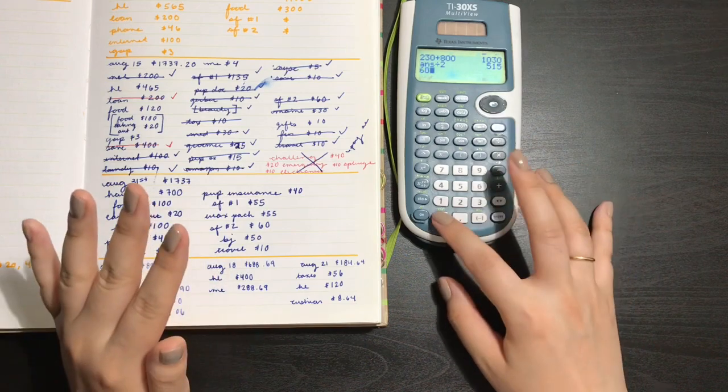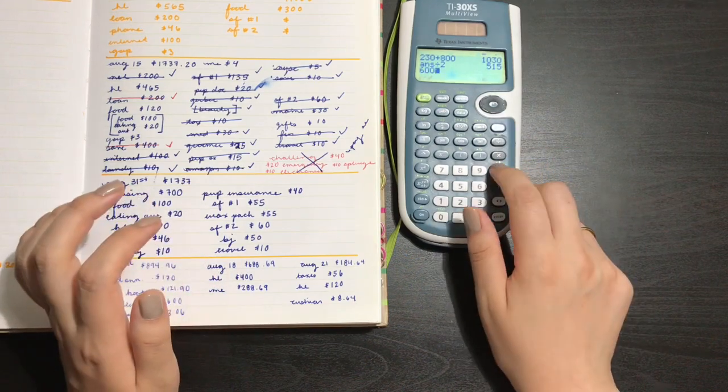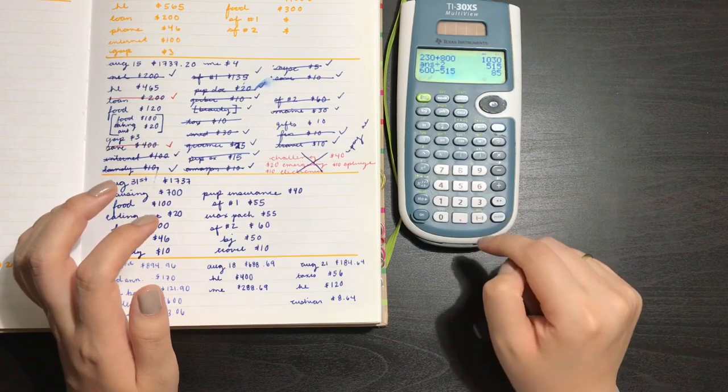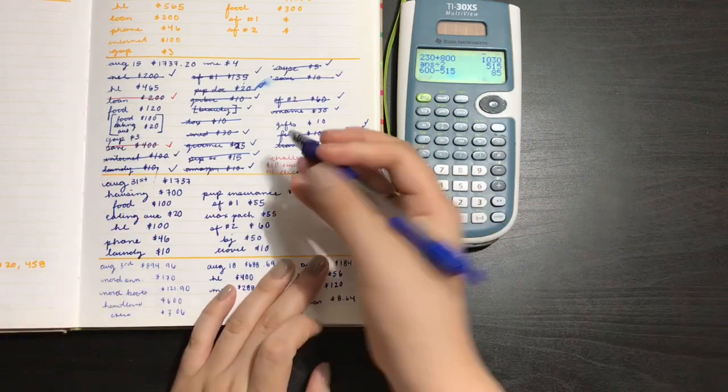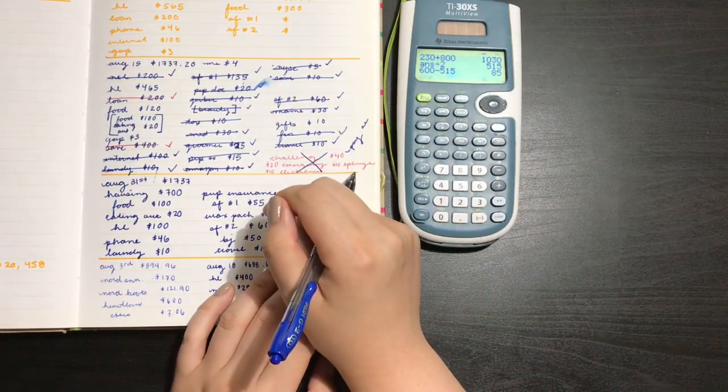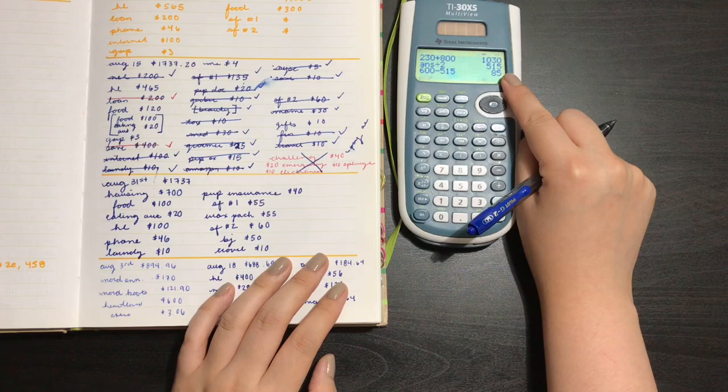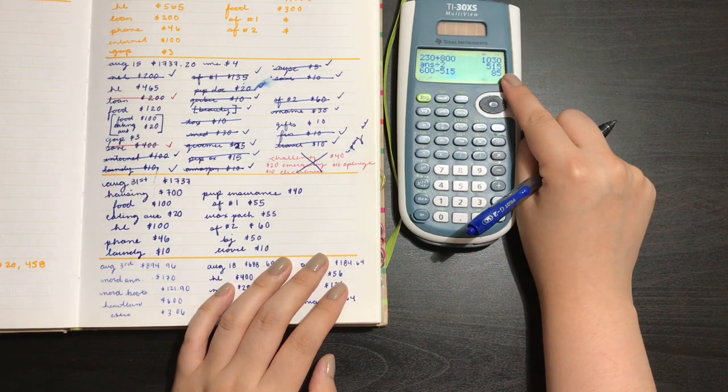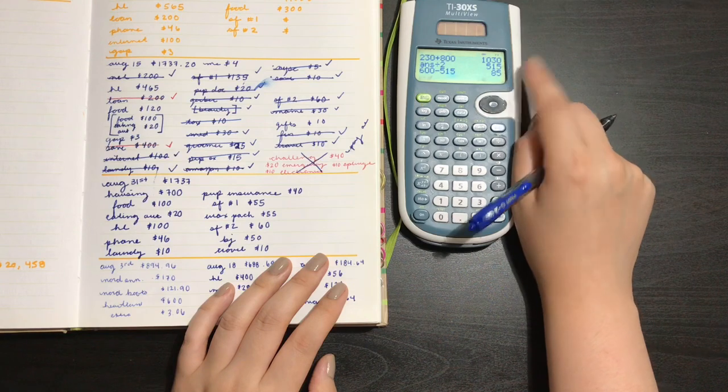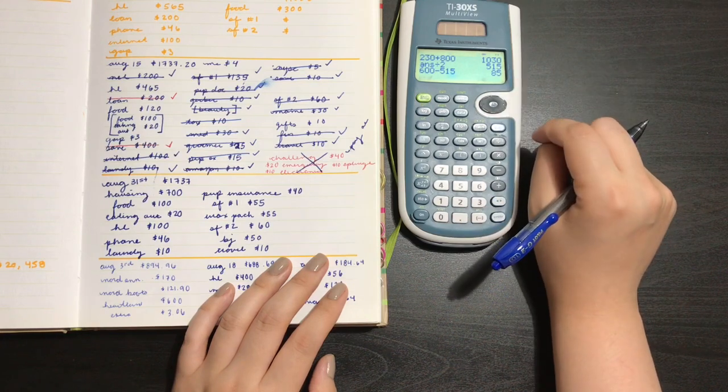So that's gonna be $1,030. Thankfully, my mom is going to be half. So divided by two, that's $515 that I have to pay for her visit. Usually, I save $600. So minus $515, that's $85 that I'll be saving only. What if it's more? Because I know it's gonna be more than $1,030.